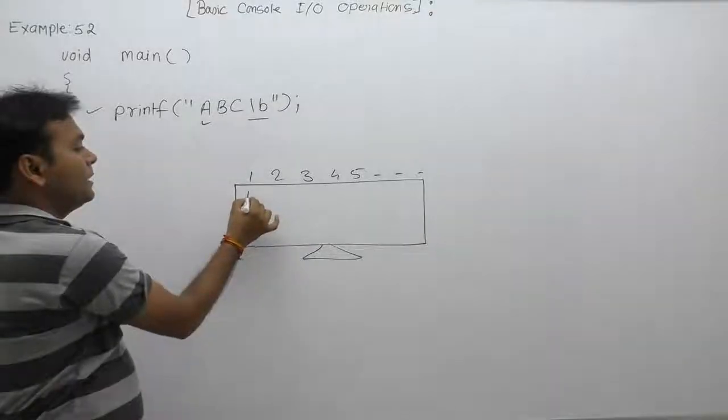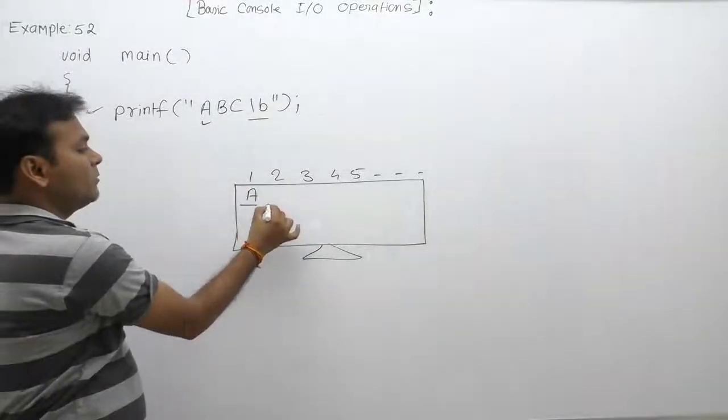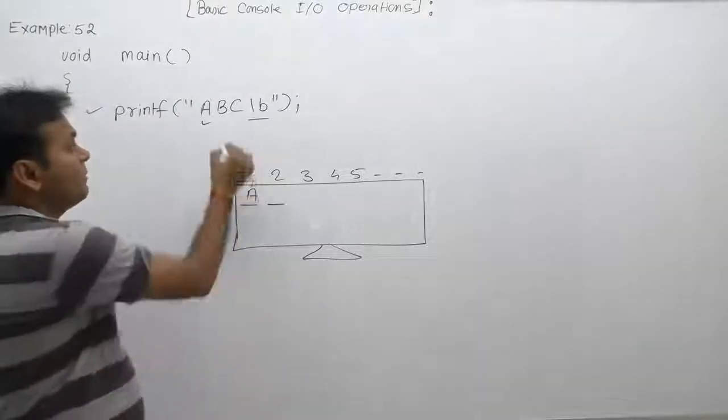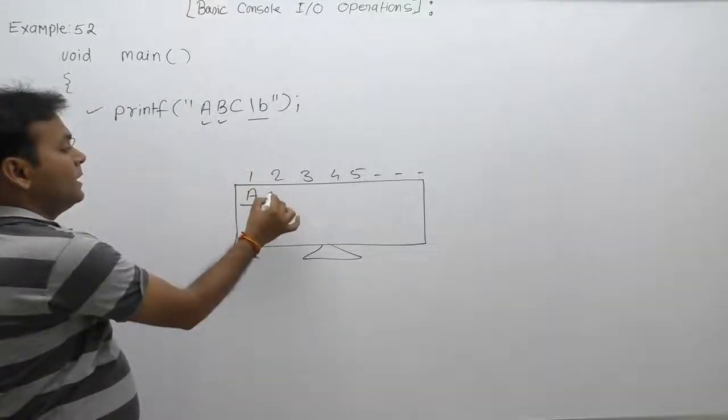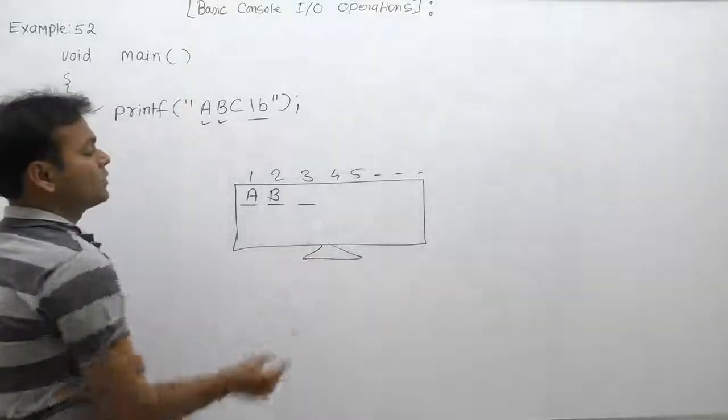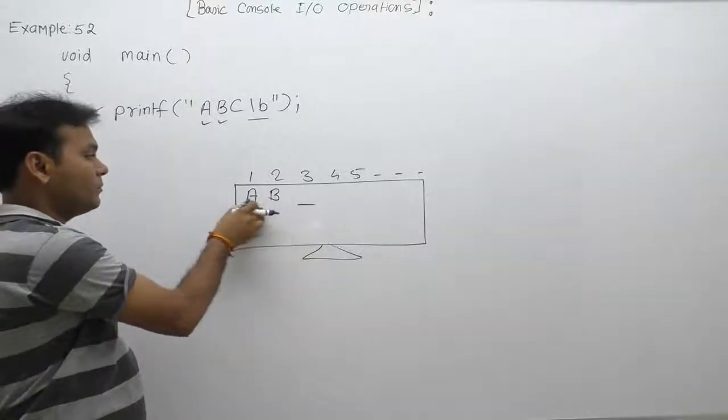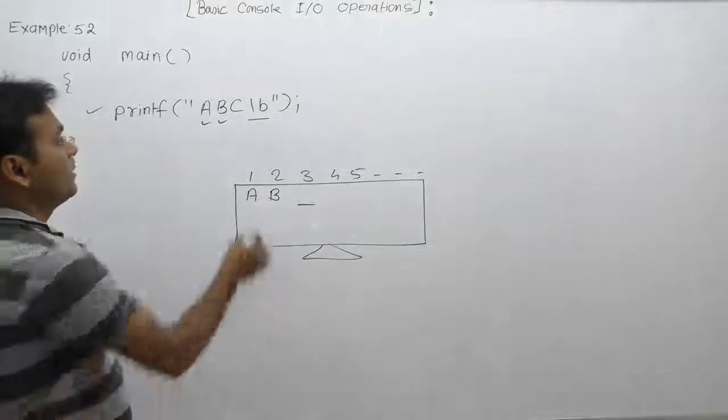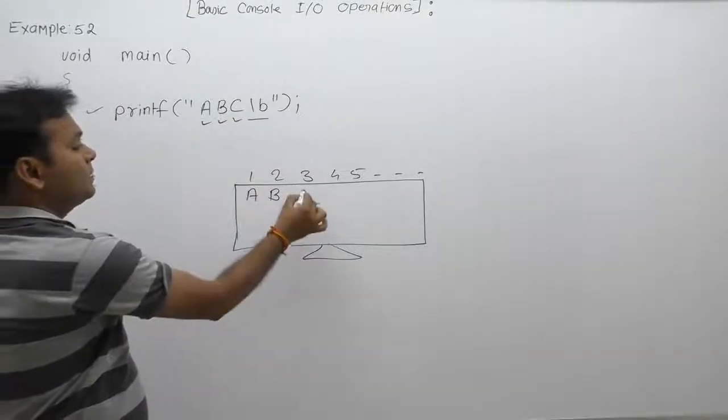'a' is printable. After that, the cursor will be available on the second position, then it will print 'b'. After that, cursor will be available on the third position. Next, it will print 'c'. After printing 'c' on the current position, cursor will be available on the fourth position.